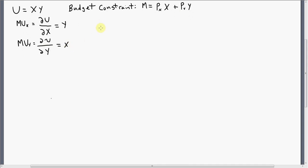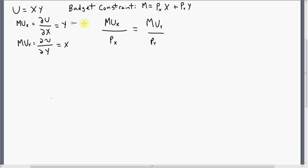The key in solving for the indirect utility function is as follows. We're going to set up our equilibrium condition for the consumer: the marginal utility per dollar of good X equals the marginal utility per dollar of good Y when the consumer is maximizing utility subject to the budget constraint. We're going to make some substitutions — plug in Y for the marginal utility of good X and X for the marginal utility of good Y.